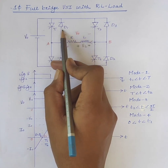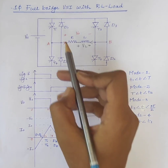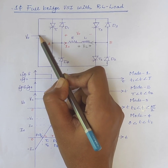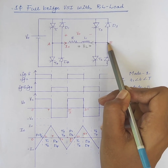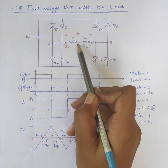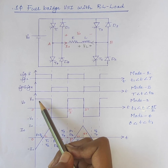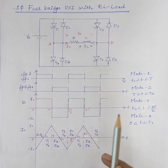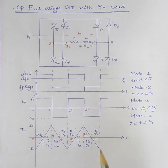Diodes D1 and D2 are turned off at T1. Also, here point A is connected to the positive terminal of the supply and point B is connected to the negative terminal of the supply. Therefore the output voltage is plus Vs. At T1 or T3, thyristors T1 and T2 can be turned on again and this cycle of operation repeats. Thank you.